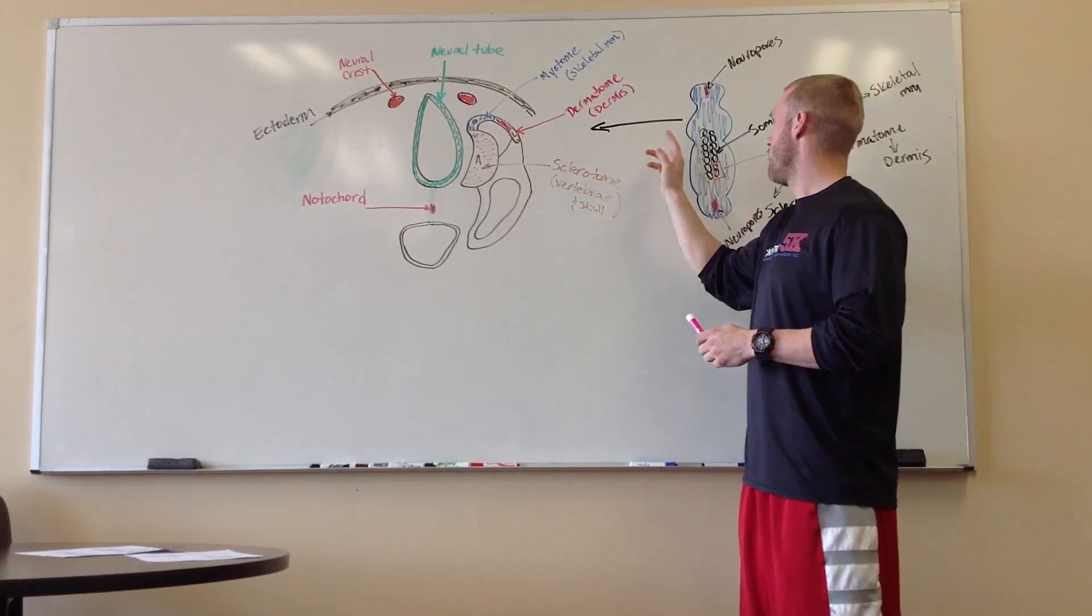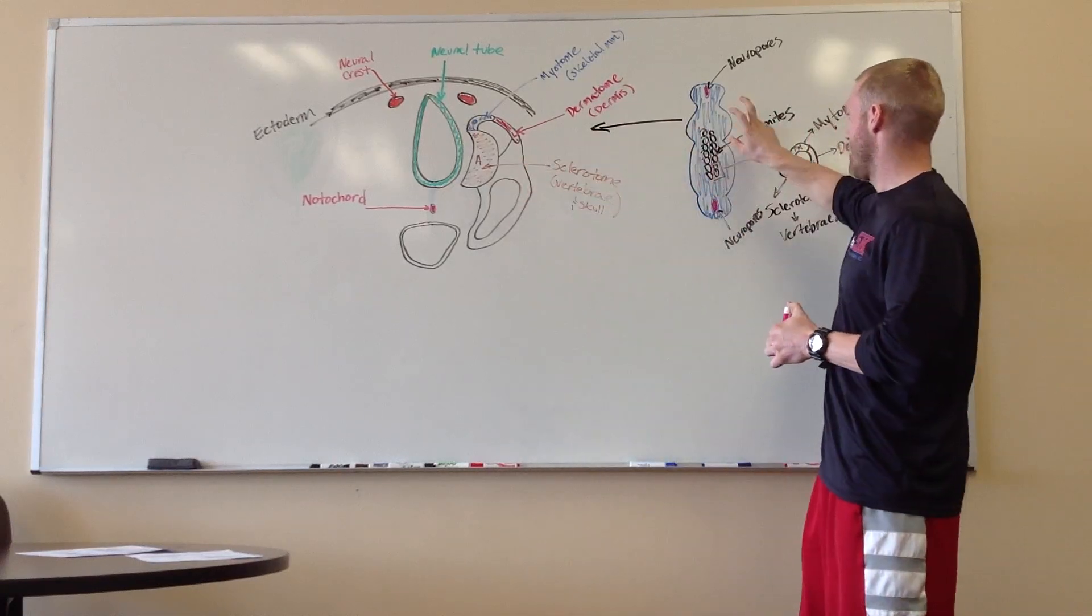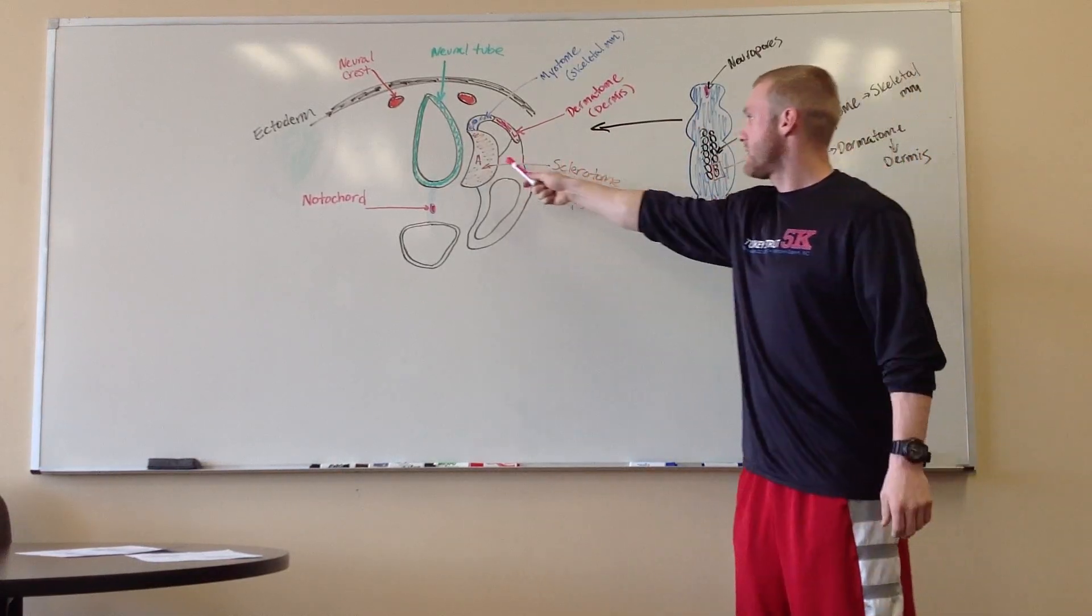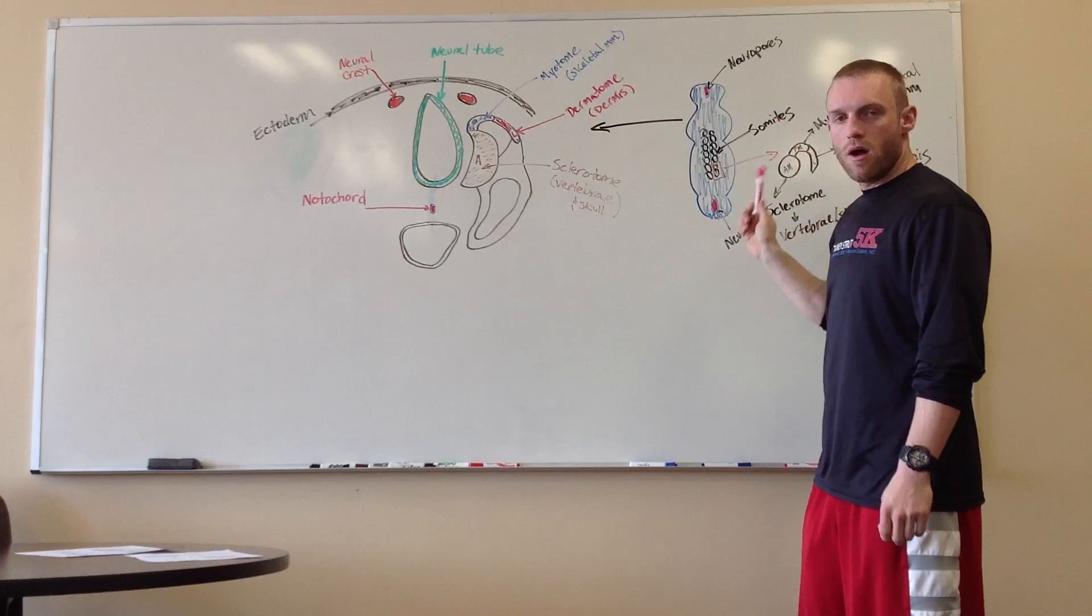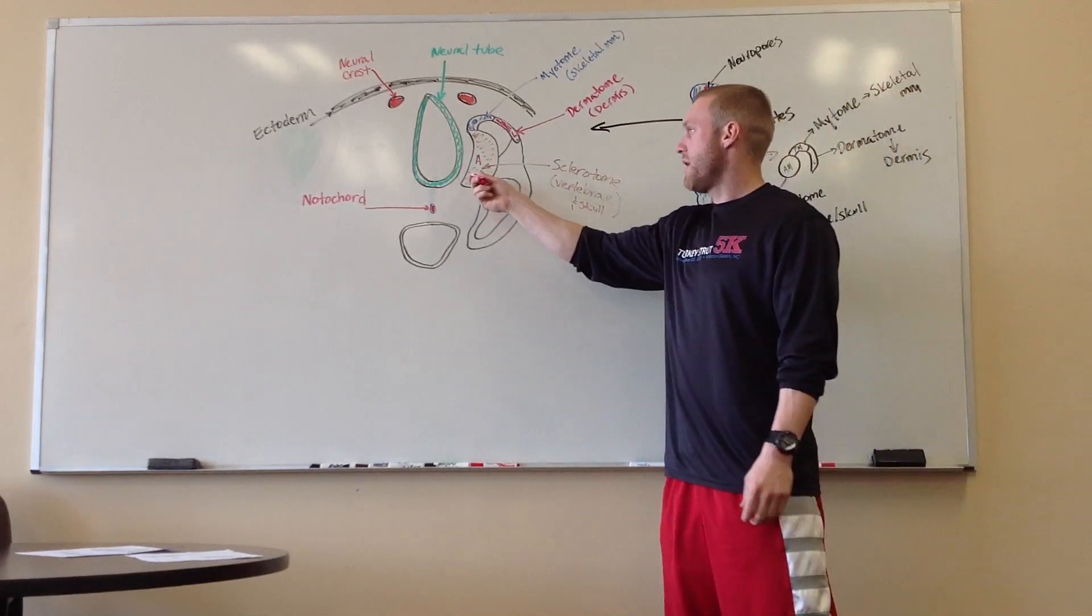And the lateral is going to be our dermatome and the dermis. So this big black arrow is just showing you what this looks like in this. And these somites, as you can see, will be all up and down, and this is how they are laid out.